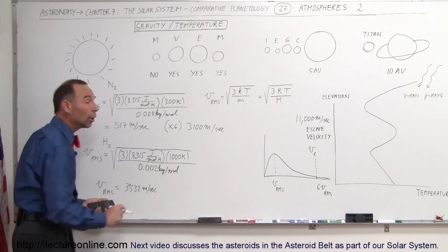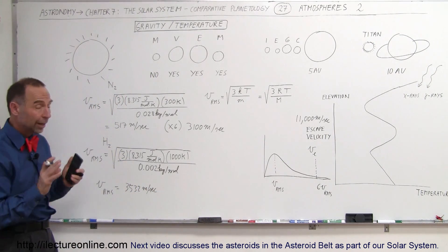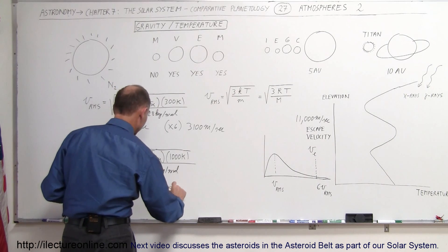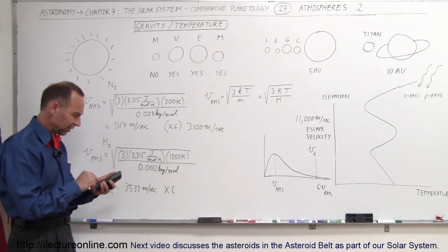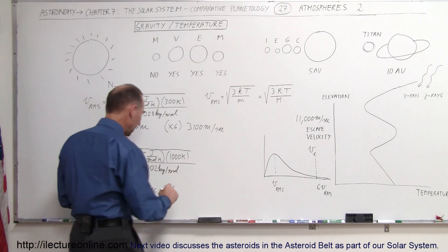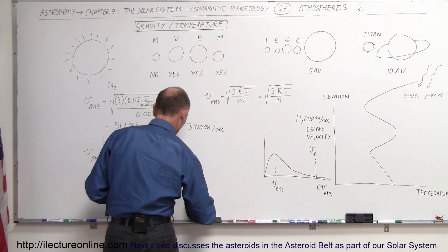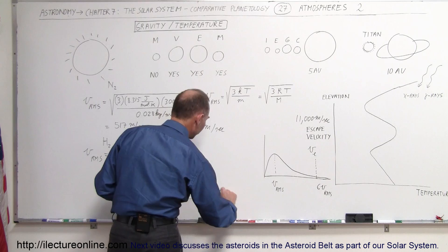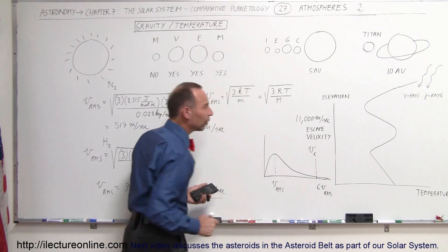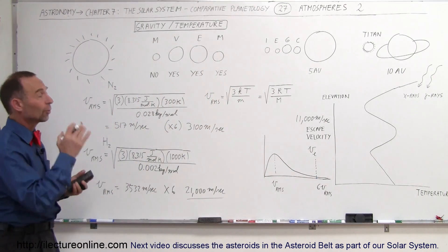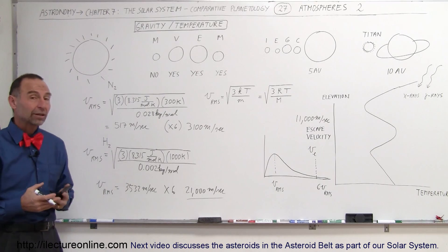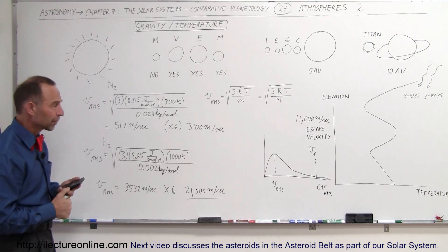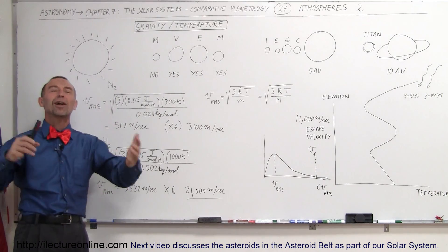Still well below the escape speed of the Earth, but now let's multiply it times 6. If we multiply that number times 6, we get about 21,000 meters per second, which is well over the escape speed for the Earth. So, 6 times the average velocity way up there would be quite a bit more than the escape velocity of the Earth.